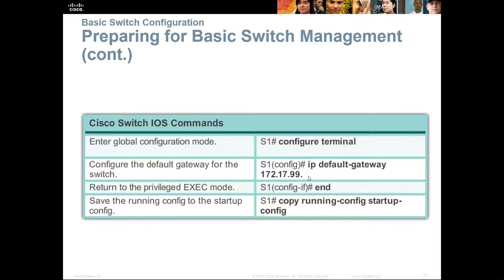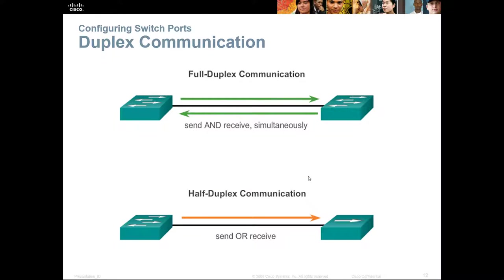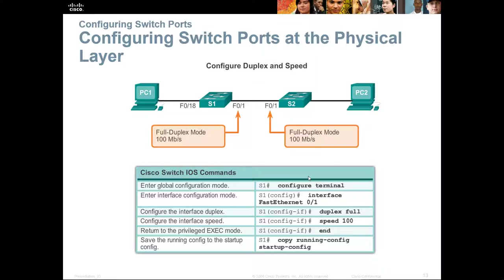There are two types of duplex: full duplex, which sends and receives simultaneously, and half duplex, which either sends or receives — not both. To set speed, navigate to the appropriate interface and specify 10, 100, or 1000 megabits. To set duplex, use the 'duplex' command followed by 'full' or 'half' to set the desired duplex mode.